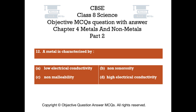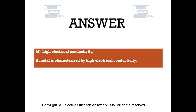Question number 12: A metal is characterized by — Option A: Low electrical conductivity. Option B: Non-sonorosity. Option C: Non-malleability. Option D: High electrical conductivity. The right answer is Option D — High electrical conductivity. A metal is characterized by high electrical conductivity.